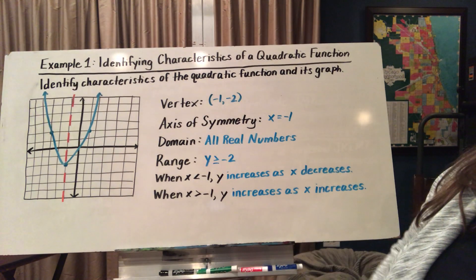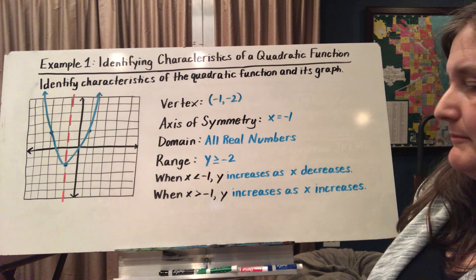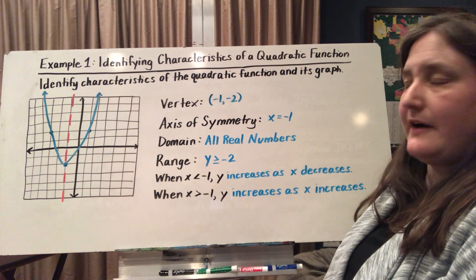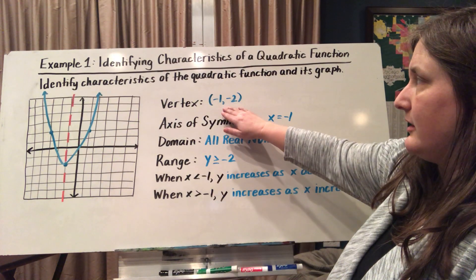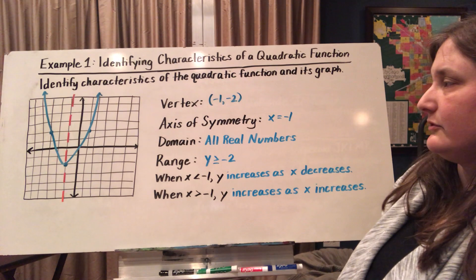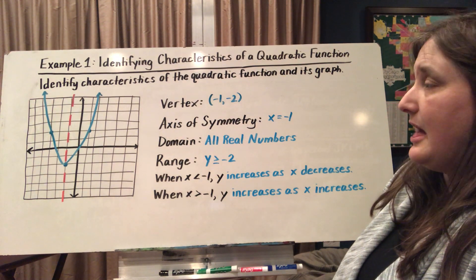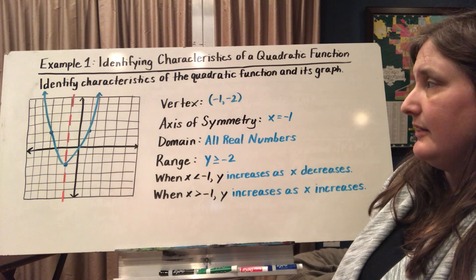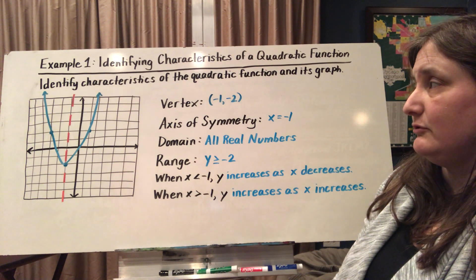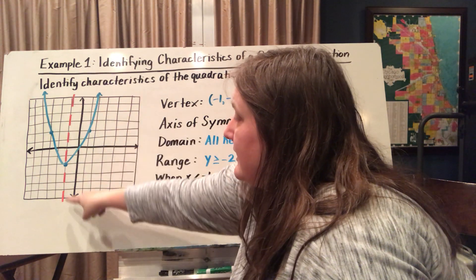When we're looking at quadratic functions, we'll notice that each quadratic has some identifiable characteristics. So we can find the vertex of our quadratic function. Here, our vertex, the direction changing point, is at negative 1 comma negative 2. The axis of symmetry, the vertical line that I could draw that would split this into two symmetrical sides, would be at x equals negative 1.